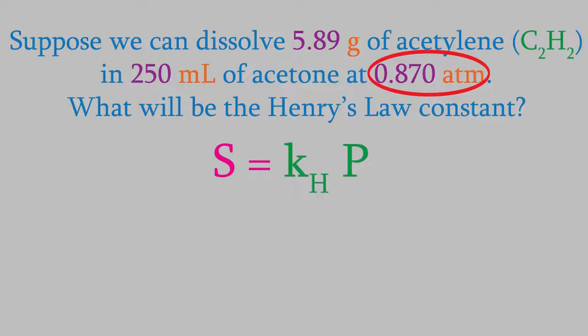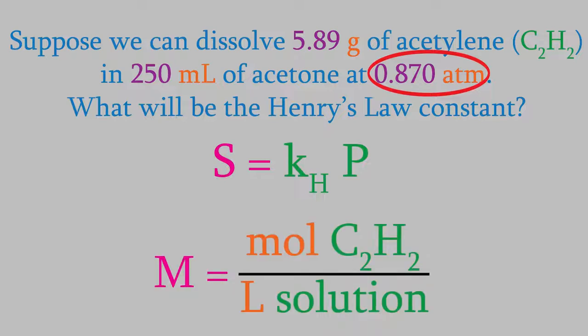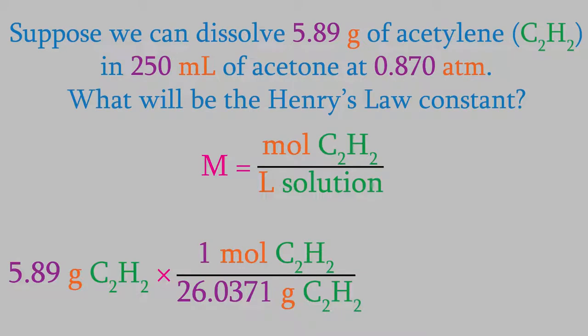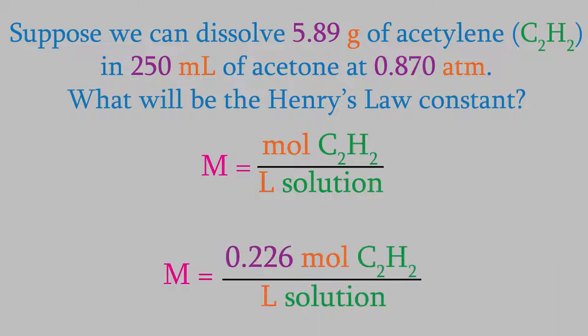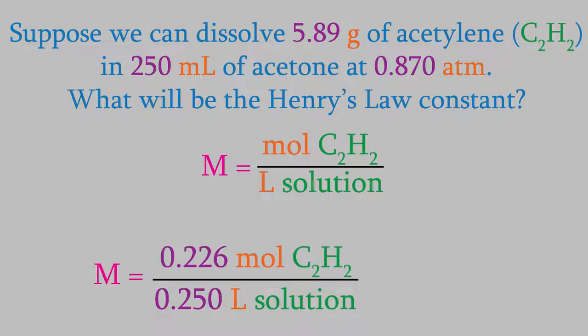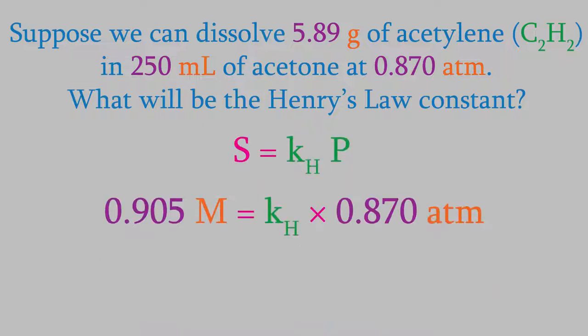Remember, S is measured in molarity, so we need to know the moles of gas and the liters of solution. We'll use the periodic table to find the moles of acetylene. When we do, we find out we have 0.226 moles. For the liters of solution, we'll use the volume of acetone, which is 0.250 liters. This is a little bit of an approximation, because the volume will increase a little when we dissolve the acetylene in it, but the difference will be very small, so it's still about 250 milliliters. This gives us a solubility of 0.905 molar, so we'll use that for S in the equation for Henry's Law. Now we can calculate the Henry's Law constant, which turns out to be 1.04 molar per atmosphere.